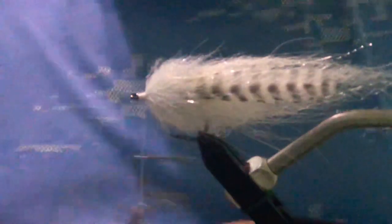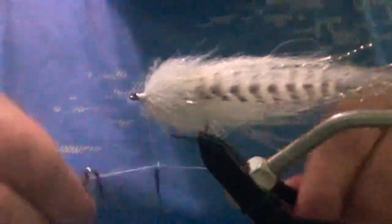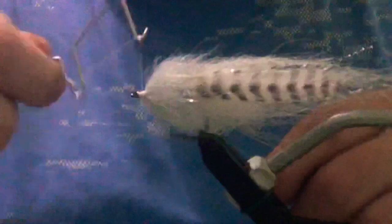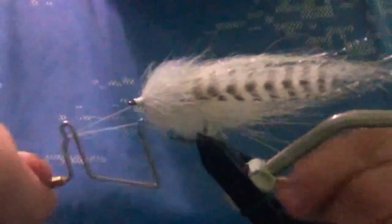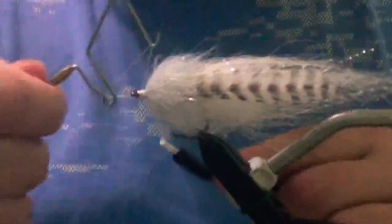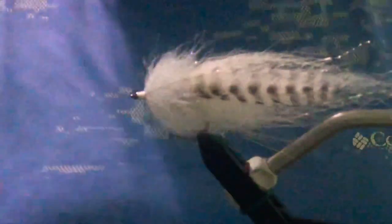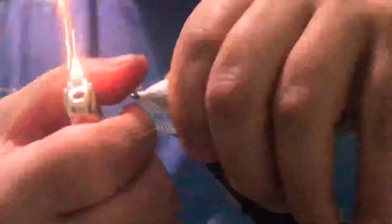Now we're going to take our whip finish and just whip finish that. We'll be done with the tying portion of this fly. If you got any loose hairs or anything up here, just take your lighter, quick little singe, get rid of all those.